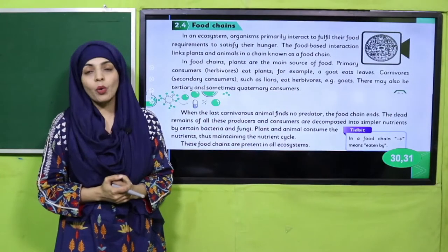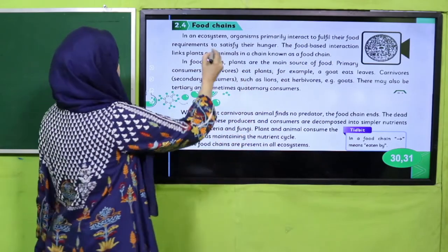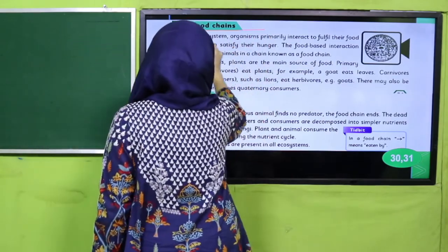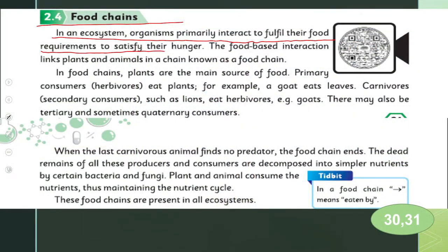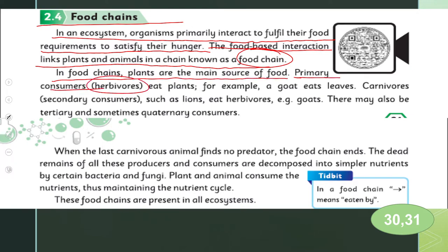Now let's start reading from page 30–31. In an ecosystem, organisms primarily interact to fulfill their food requirements. The food-based interaction links plants and animals in a chain known as a food chain. In food chains, plants are the main source of food. Primary consumers are herbivores that eat plants — for example, a goat eats leaves. Carnivores are secondary consumers, such as lions that eat herbivores — for example, a lion eats a goat.